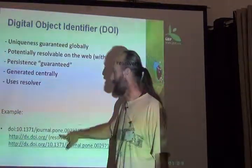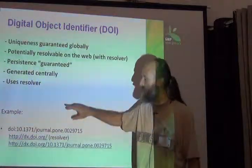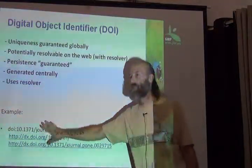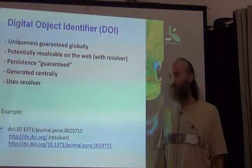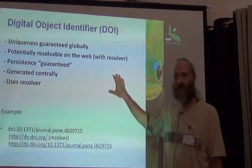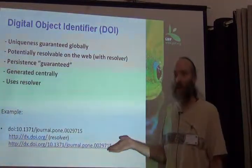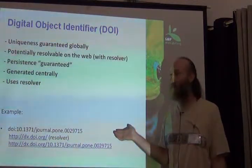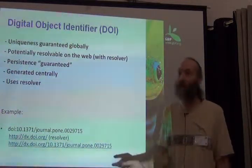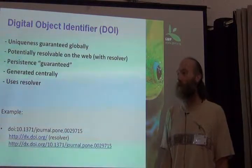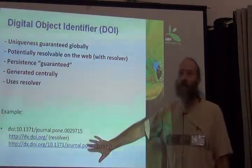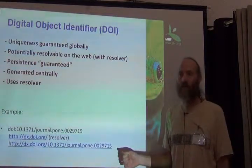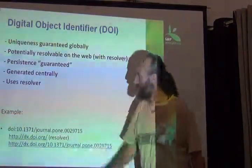Persistence for DOIs is guaranteed — they're generated centrally and kept. The persistence holds as long as the DOI infrastructure continues to exist. DOI is more robust than an LSID because it has an actual sustainability model: an economic model where you pay to use it. An LSID is free, but there's no guarantee resolvers will continue to exist since someone pays for the server, and when they can't anymore, it goes away. DOIs have a huge impact in the literature world and are likely to remain supported, but there is a cost.